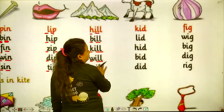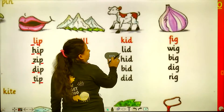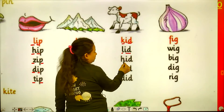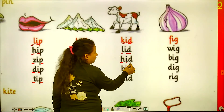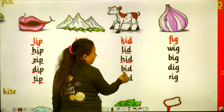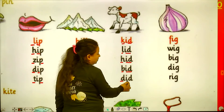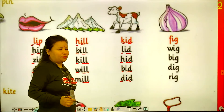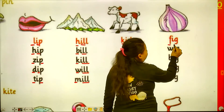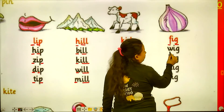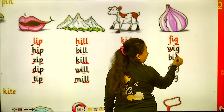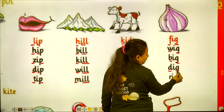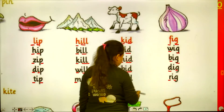Now next: kid, lid, hit, bid, and did. Then: wig, big, and rick.